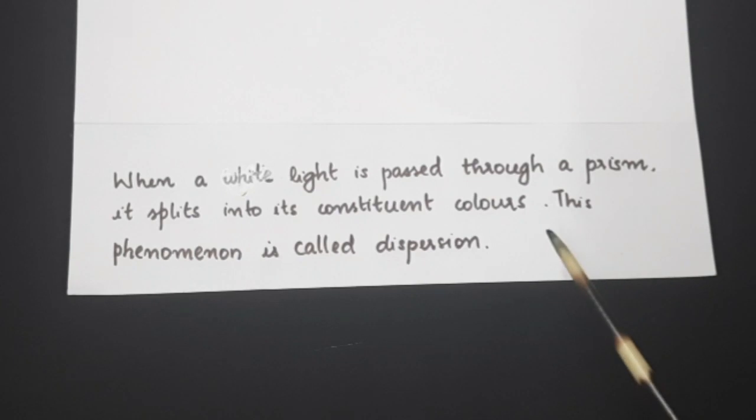When a white light is passed through a prism, it splits into its component colors. This phenomenon is called dispersion. This is what is happening in this experiment.